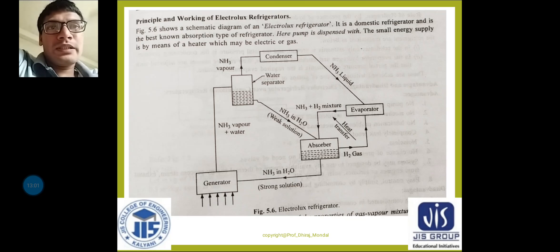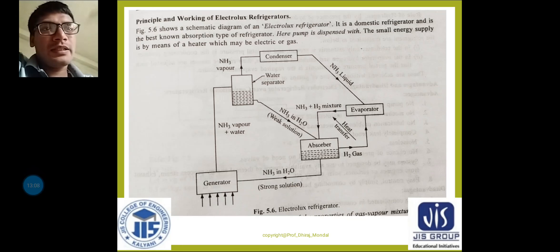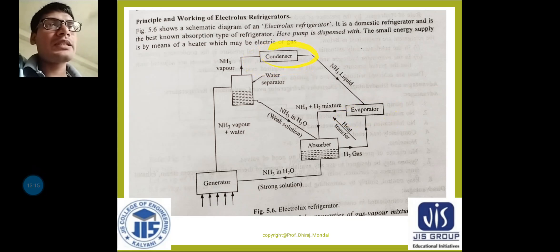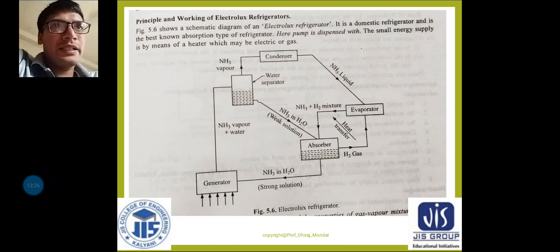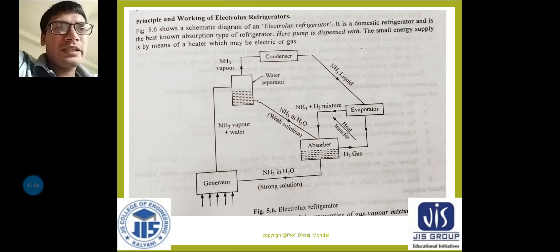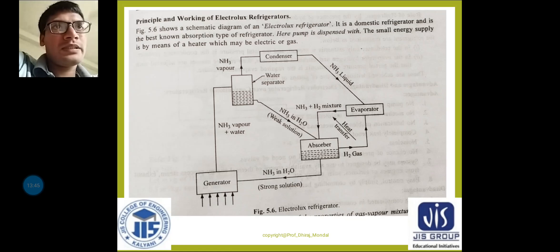The partial pressure of ammonia is kept low in the required parts of the circuit by concentrating hydrogen in those parts. The ammonia liquid leaving the condenser enters the evaporator, where it evaporates into the hydrogen — in the evaporator, hydrogen gas circulates between the absorber and evaporator, and ammonia and hydrogen mix together.